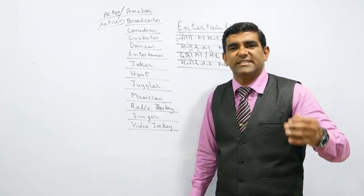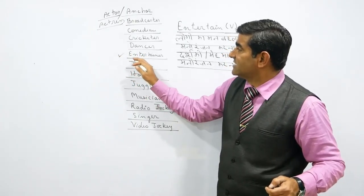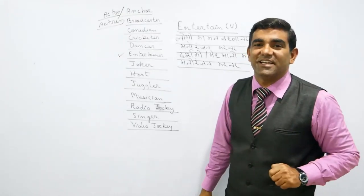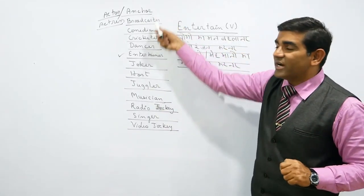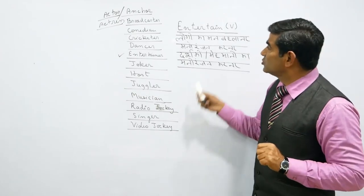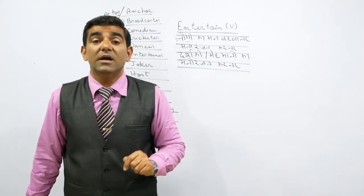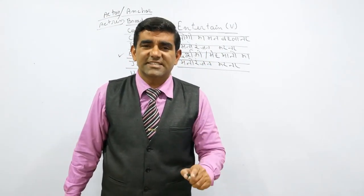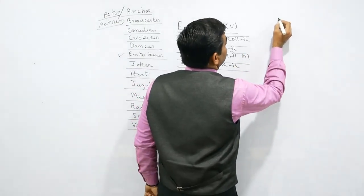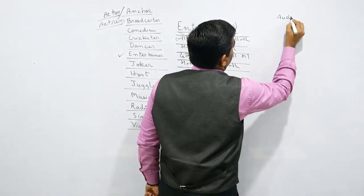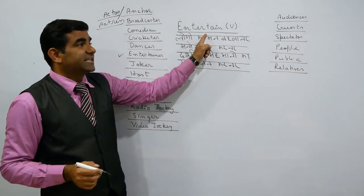Cricketer, by hitting fours and sixes, entertains us. We call them entertainer. So students, we can use this as a subject. In the middle comes the verb, and at the end we use the object. We do entertainment of whom?